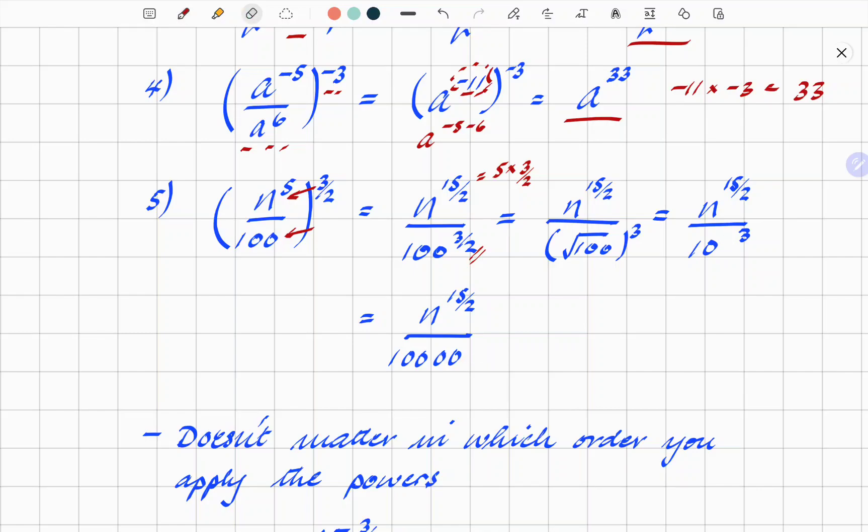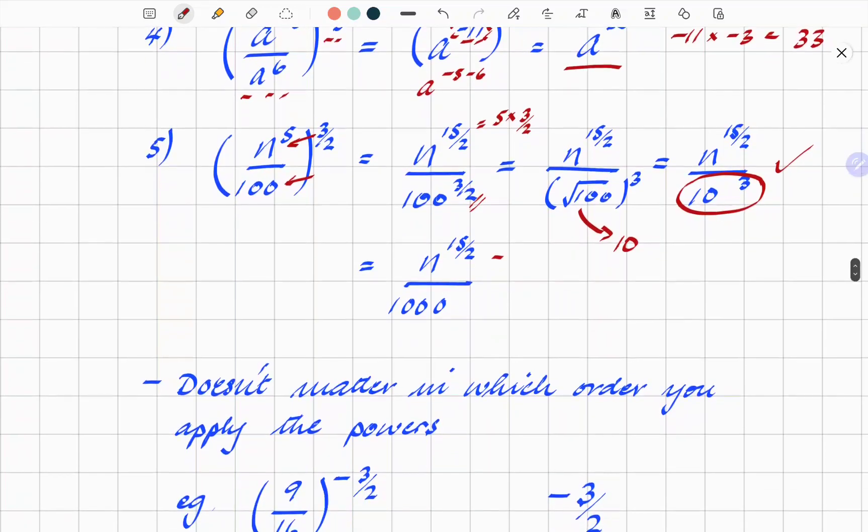So, the top bit, N to the power 15 over 2, doesn't change. There's no nicer way of writing that. The bottom bit, however, we can actually apply the power 1 over 2 as a square root of 100. I've made a little mistake there, I think. Yep, I have. And I'm going to correct that straight away. I apologize to you for having that mistake there to begin with. Square root of 100 is 10. So, here we've got 10 cubed. And so that ends up as 1,000. So, N to the power 15 over 2, divided by 1,000. We could actually leave it like that. That would be just as correct. Depends on what the question says. Sorry about the little hiccup in the middle, but hopefully that's been clarified.